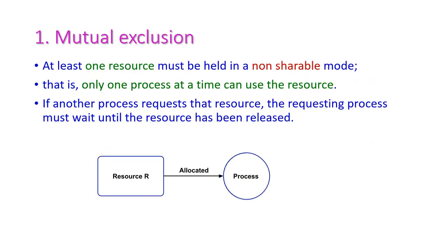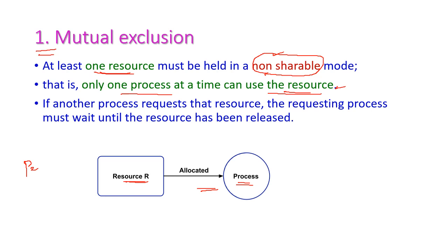First, let us see mutual exclusion. In the system resources, at least one resource must be held in non-shareable mode. Non-shareable mode means only one process at a time can use that particular resource. If another process P2 wants to execute using that resource simultaneously, then P2 has to wait until the resource is released by the current process, because this resource is non-shareable.